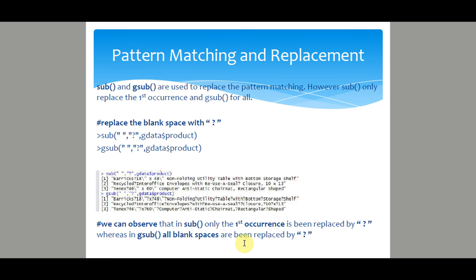Next is the sub and gsub to replace the pattern matching. However, sub only replaces the first occurrence and gsub for all. For example, replace the blank space with question mark. Sub first defines the pattern, in this case blank space, then the substitute value for the blank space, that is the question mark. Do the same for gsub and observe the difference.